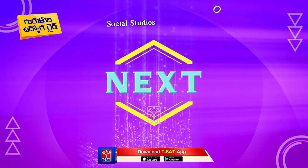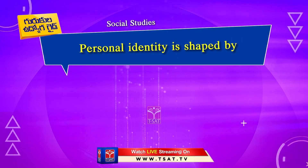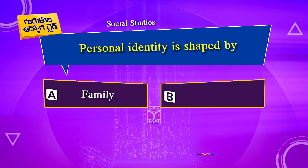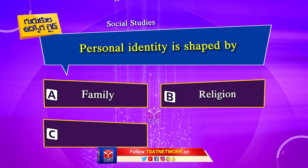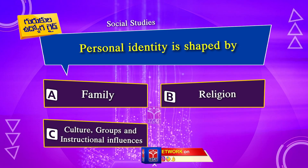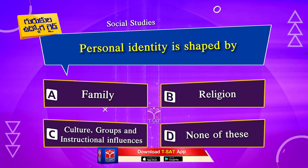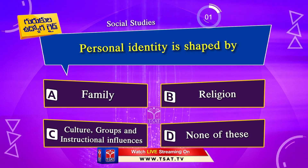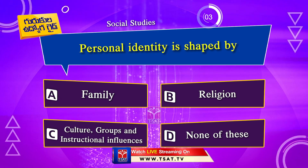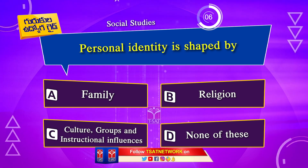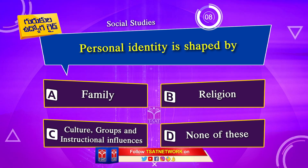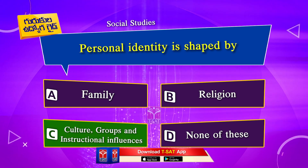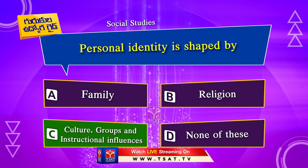Next question. Personal identity is shaped by: Option A. Family. Option B. Religion. Option C. Culture, groups and instructional influences. Option D. None of these. The correct answer is Option C. Culture, groups and instructional influences.